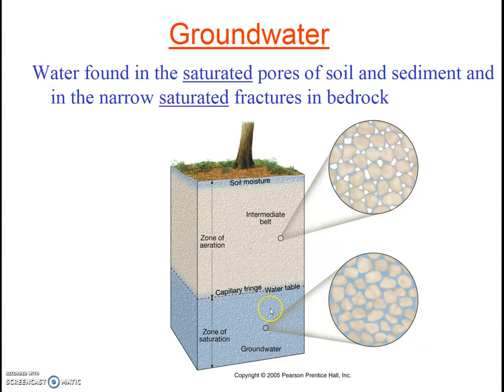The top of the saturated zone is called the water table. Notably, the water table moves up and down depending on how much surface water is infiltrating and how much groundwater humans are pumping out. Study this diagram until you feel comfortable with the terms groundwater, unsaturated zone, saturated zone, and water table.